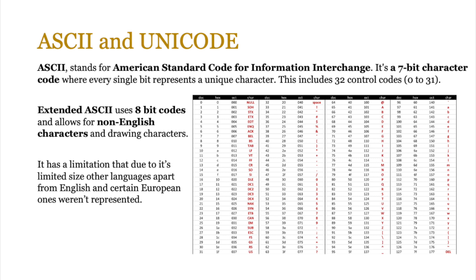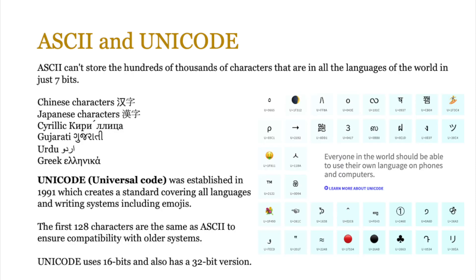Extended ASCII has a limitation in that other languages apart from English and certain European ones aren't represented. ASCII can't store the hundreds of thousands of characters in all the languages of the world in just seven bits. If you think about Chinese characters, Japanese characters, Cyrillic, Gujarati, Urdu, Greek — and even emojis — all of those can't be represented in ASCII. Therefore, Unicode was established in 1991, a character set creating a standard covering all languages and writing systems, including emojis.